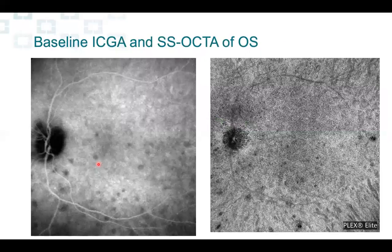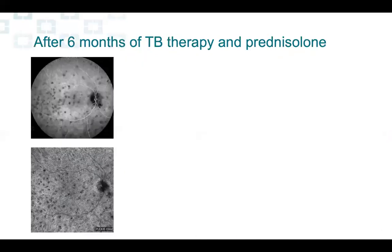We have the same appearance in the left eye. This is the ICG we were seeing before with the hypofluorescent granulomas, and you can see very well how OCTA of the choroid mirrors this appearance with flow voids corresponding to granulomas. The patient was sent to the infectious disease doctor, who started quadruple therapy for tuberculosis and prednisone.